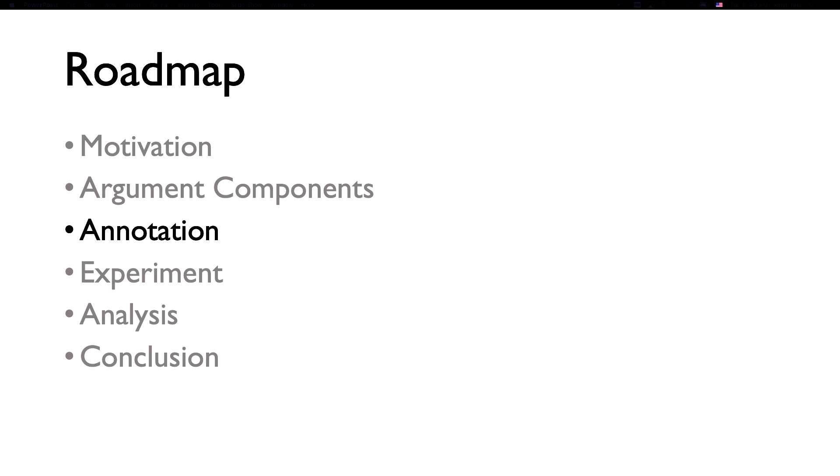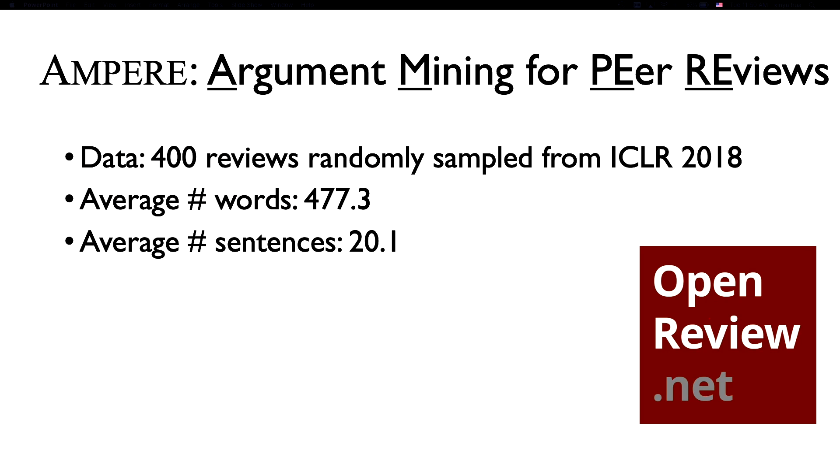With this argument schema, we conduct some annotation study, where we collect 400 reviews randomly sampled from ICLR 2018. This is publicly available through the OpenReview API. Some basic statistics of this dataset is listed here. We can see that an average review has about 500 words spanning 20 sentences. Here we call this newly collected data AMPERE, which is short for Argument Mining for Peer Reviews.